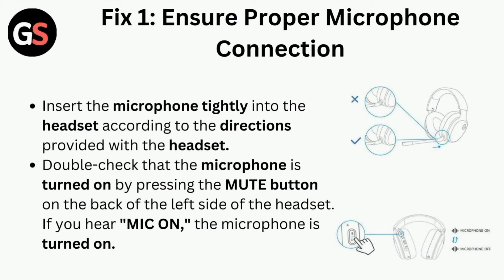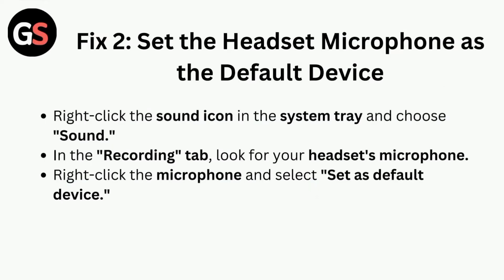Fix 1: Ensure proper microphone connection. Insert the microphone tightly into the headset according to the directions provided. Double check that the microphone is turned on by pressing the mute button on the back of the left side of the headset. If you hear 'mic on,' the microphone is turned on.